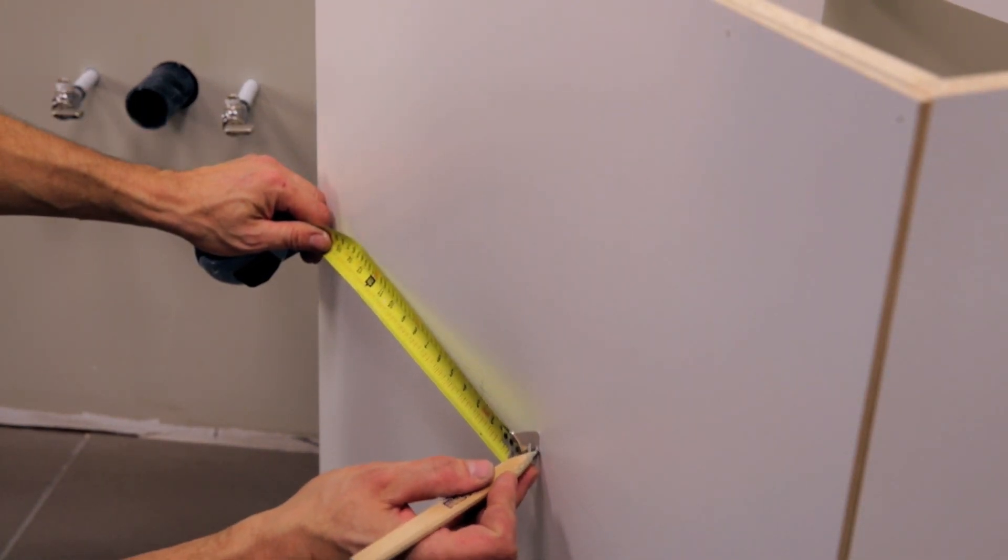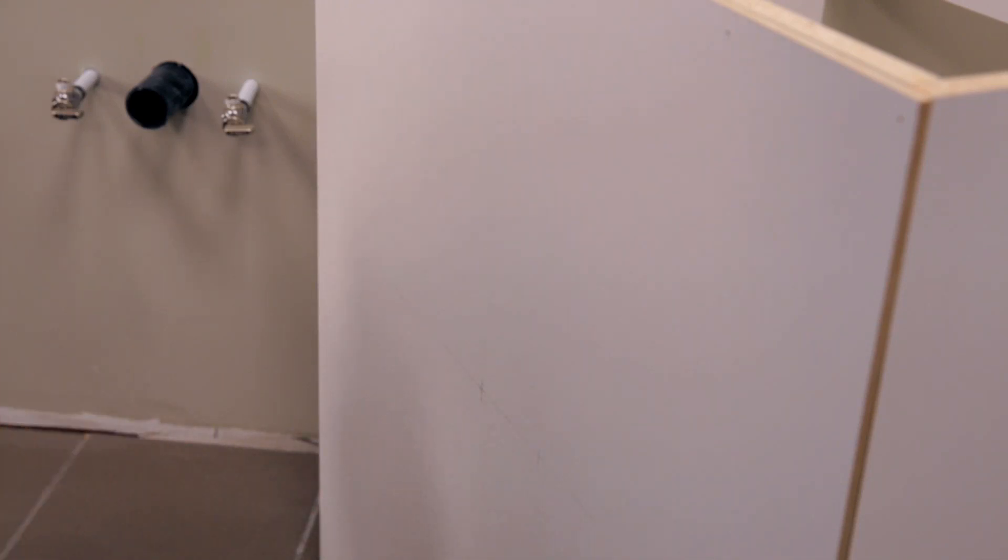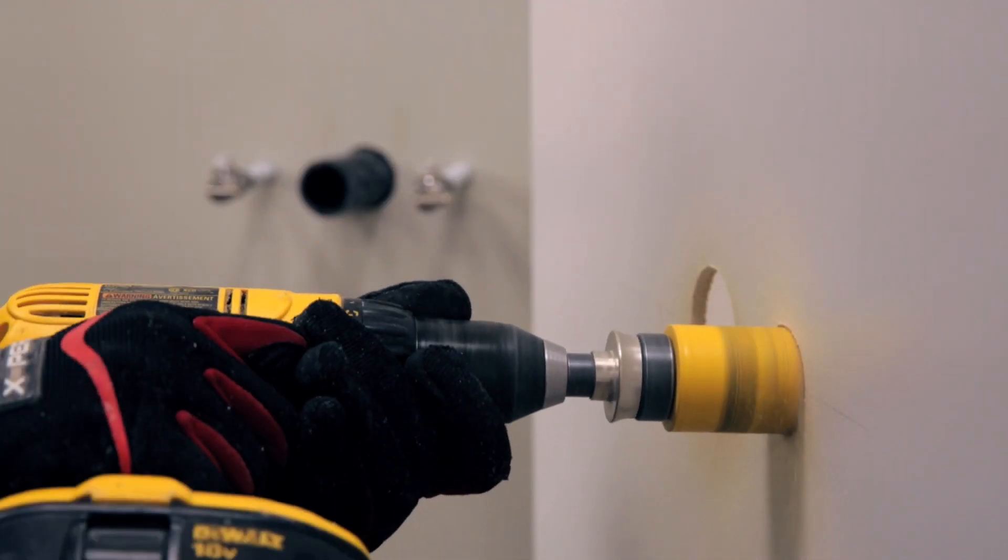Measure the exact location of the pipes, mark the size of the openings, and make the cutouts with a jigsaw or a hole saw.